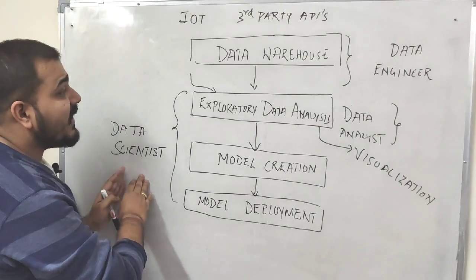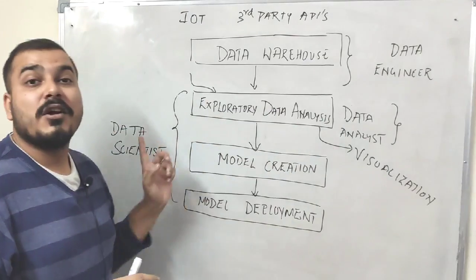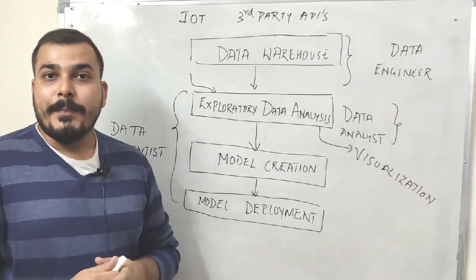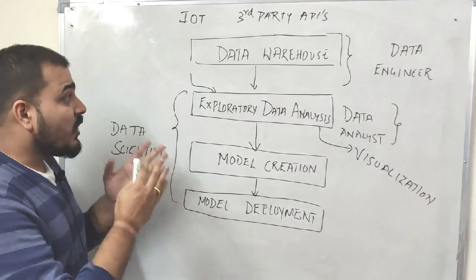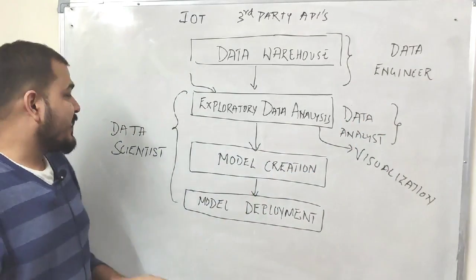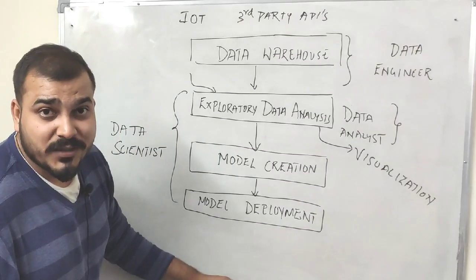Here you can see that a data scientist can also do the work of a data analyst, but vice versa is not possible. A data analyst will not know how to do model creation or deployment. This in short gives you a basic difference between a data engineer, data analyst, and data scientist. The last step was model optimization.